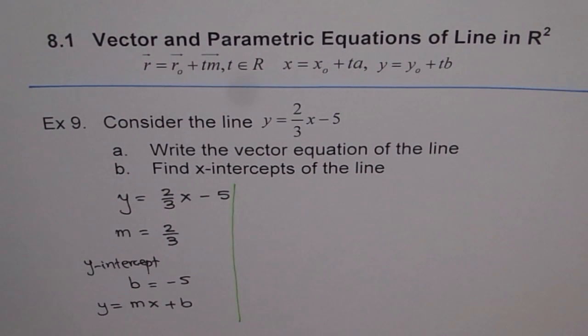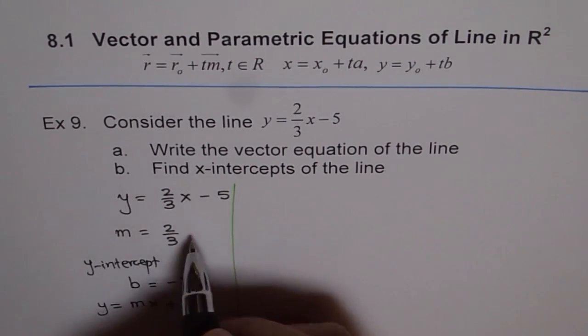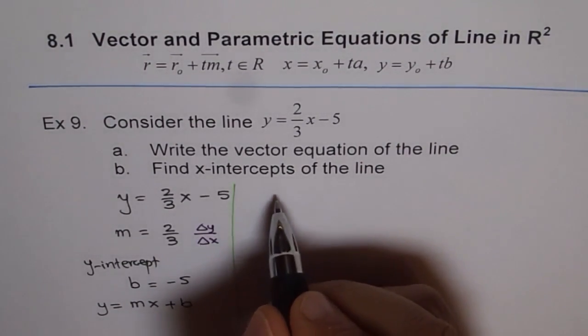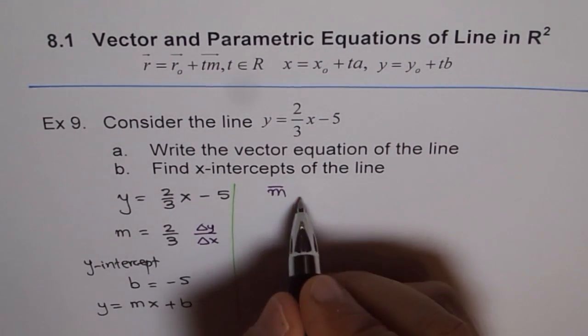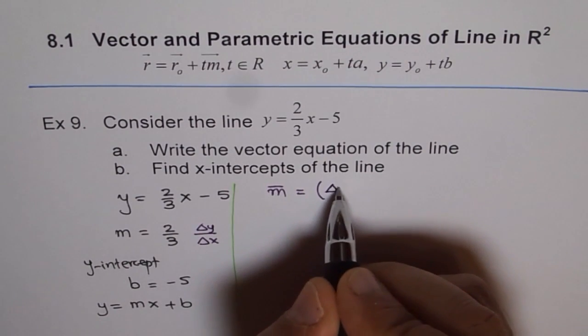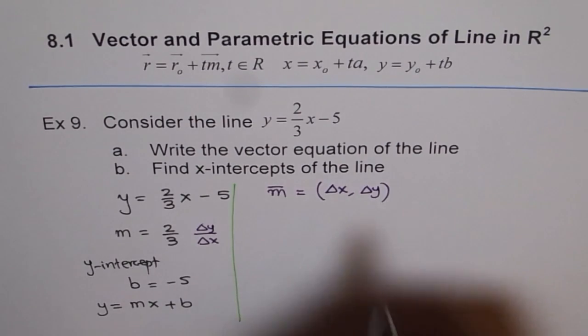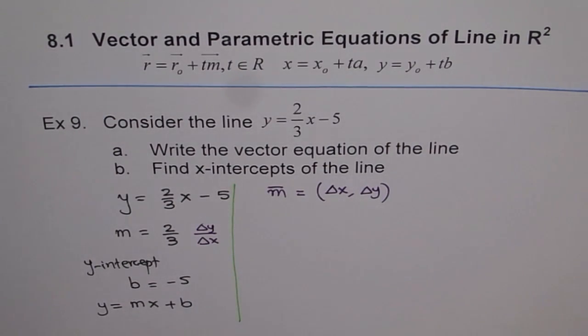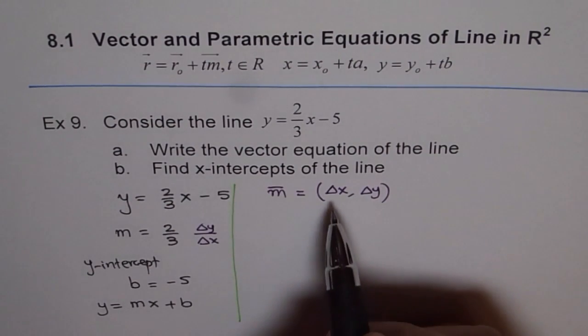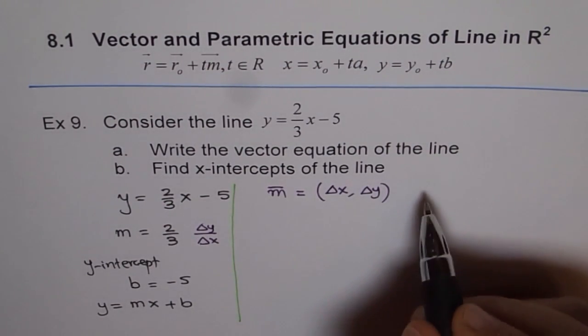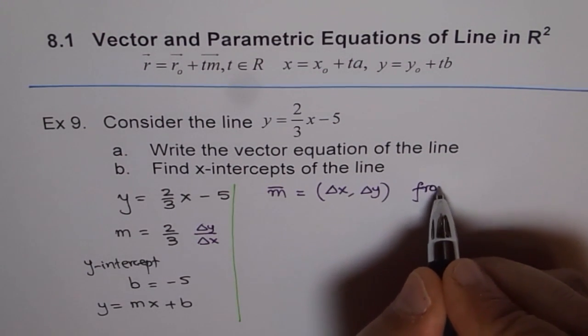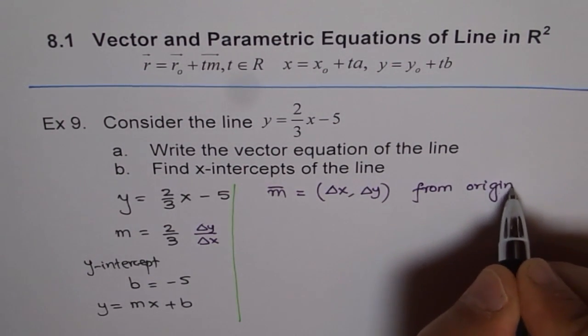One part to it is slope and direction vector. Slope is change in y over change in x. Whereas the direction vector which we say m is actually change in x comma change in y. We write it like a coordinate. Change in x with change in y and we measure it from the origin. That's the point which is from the origin and that gives you the direction. The second point here is the origin. So it's always seen from origin.